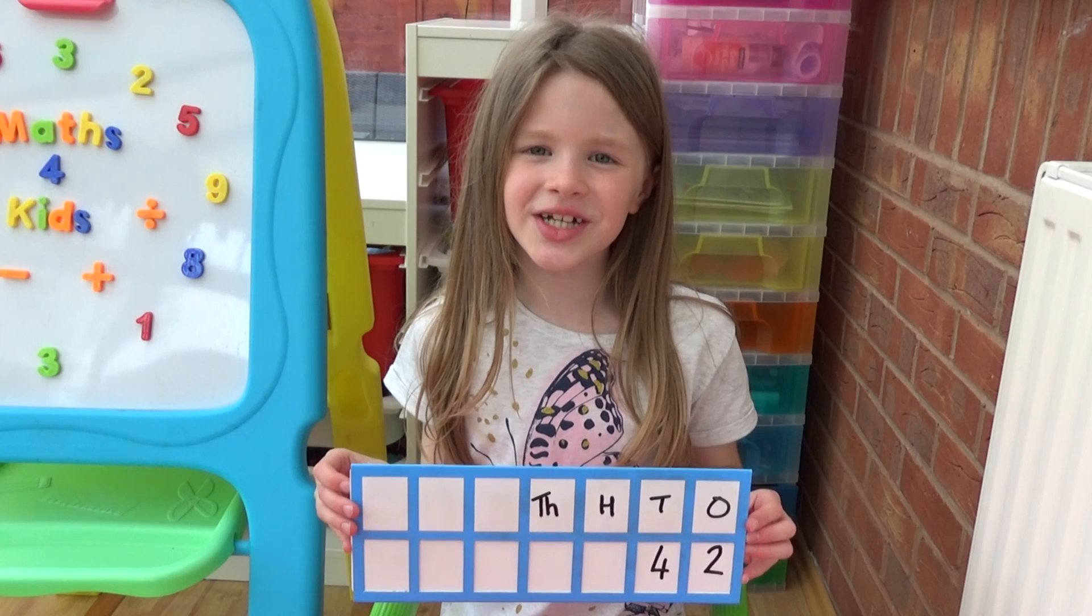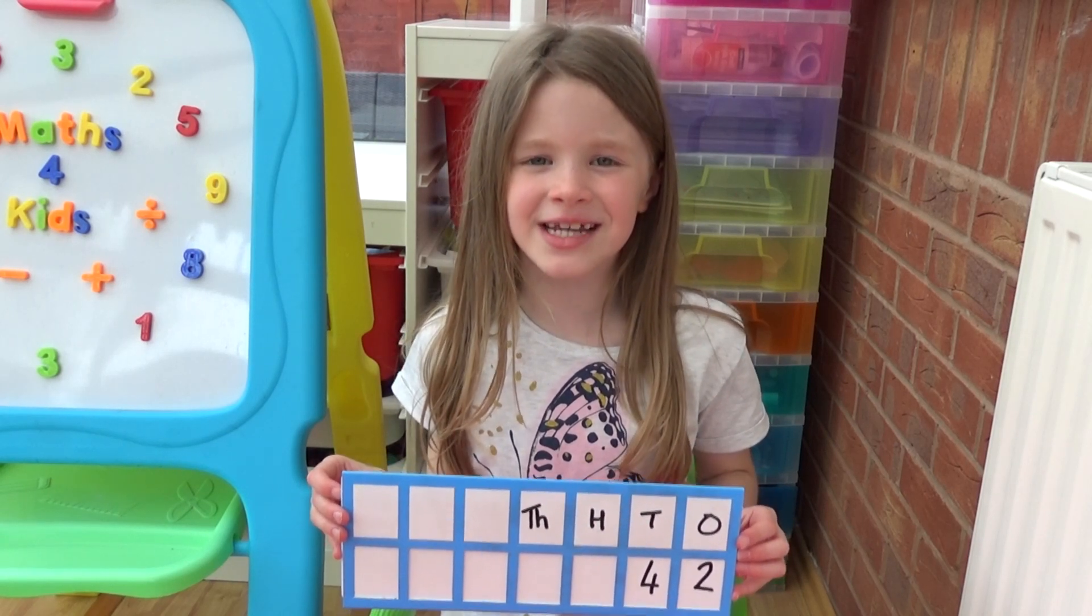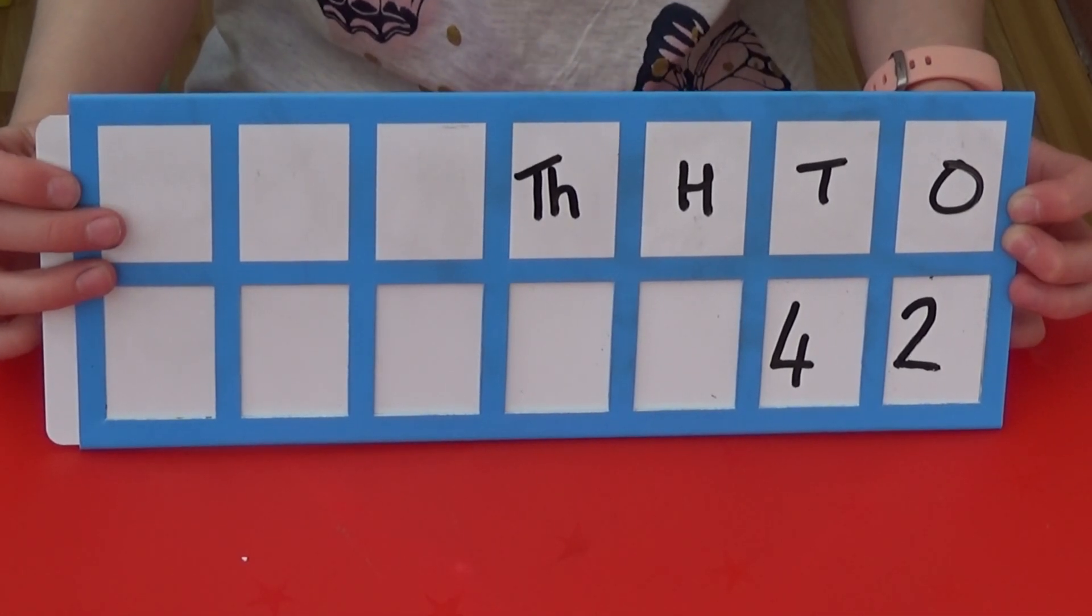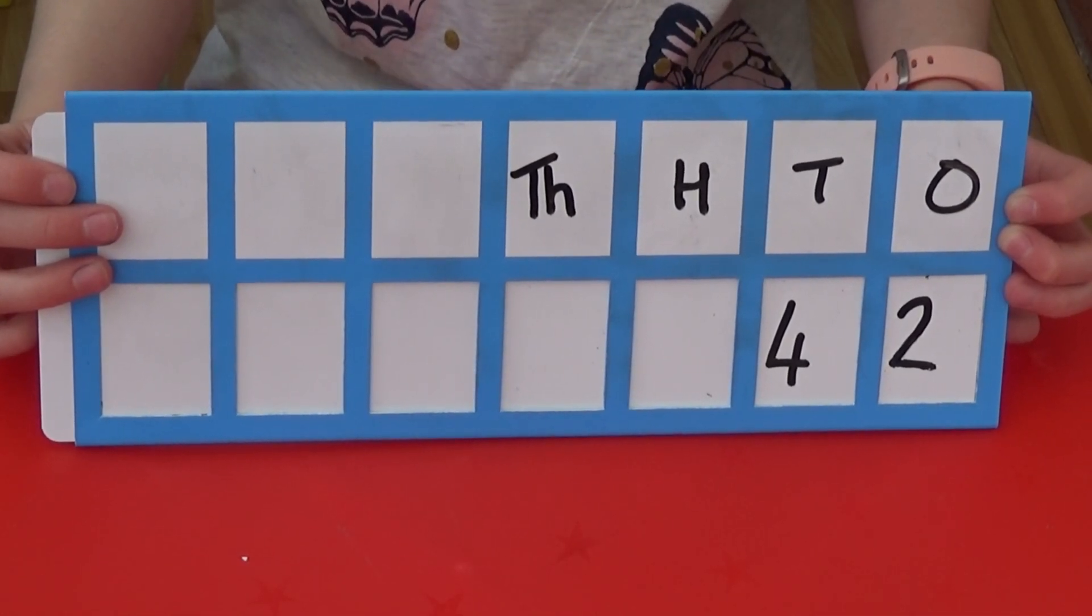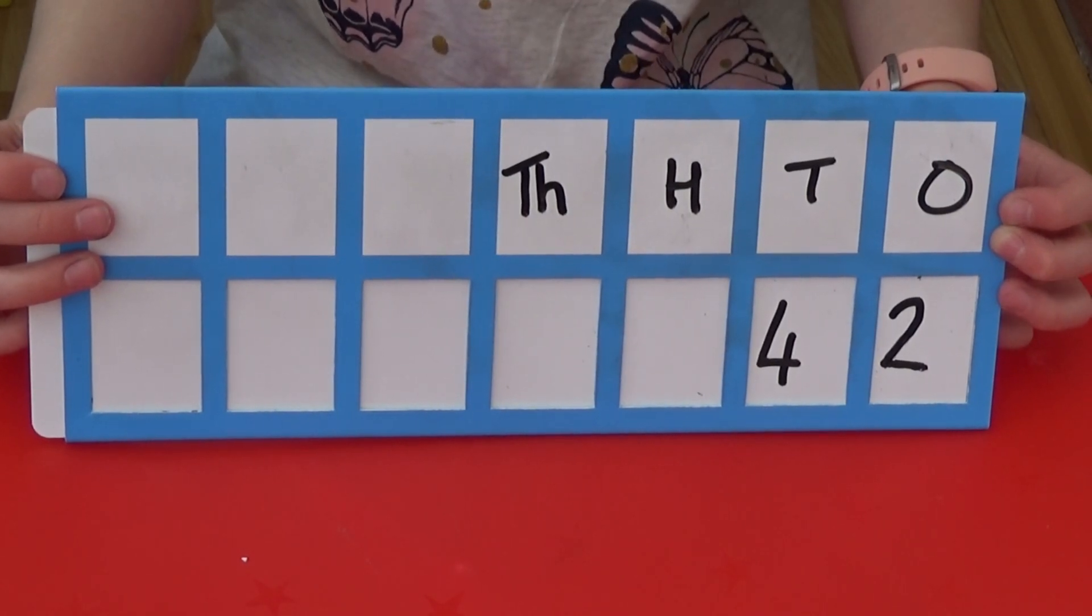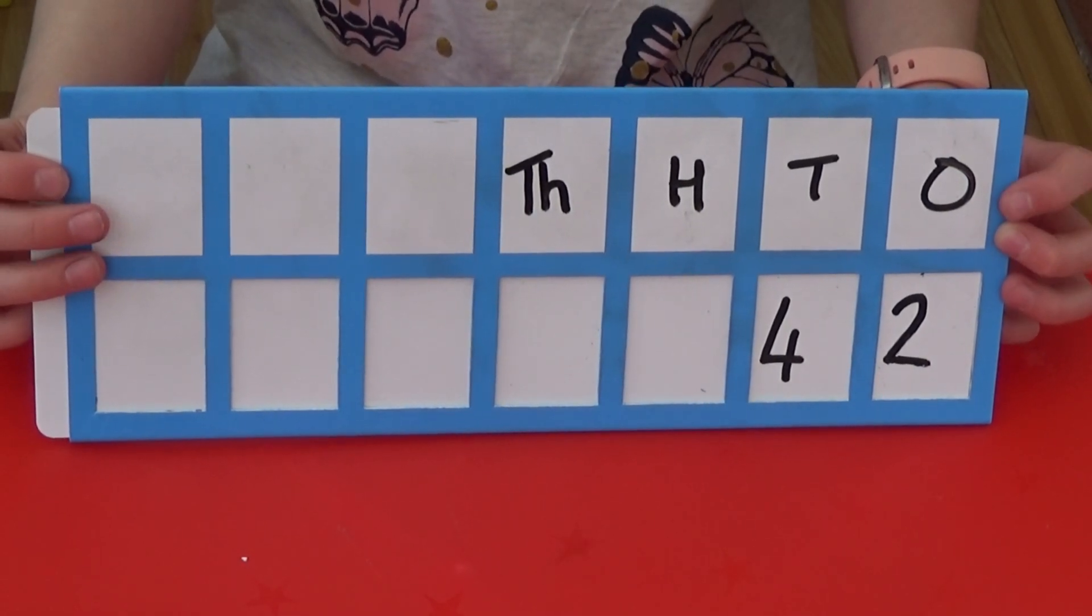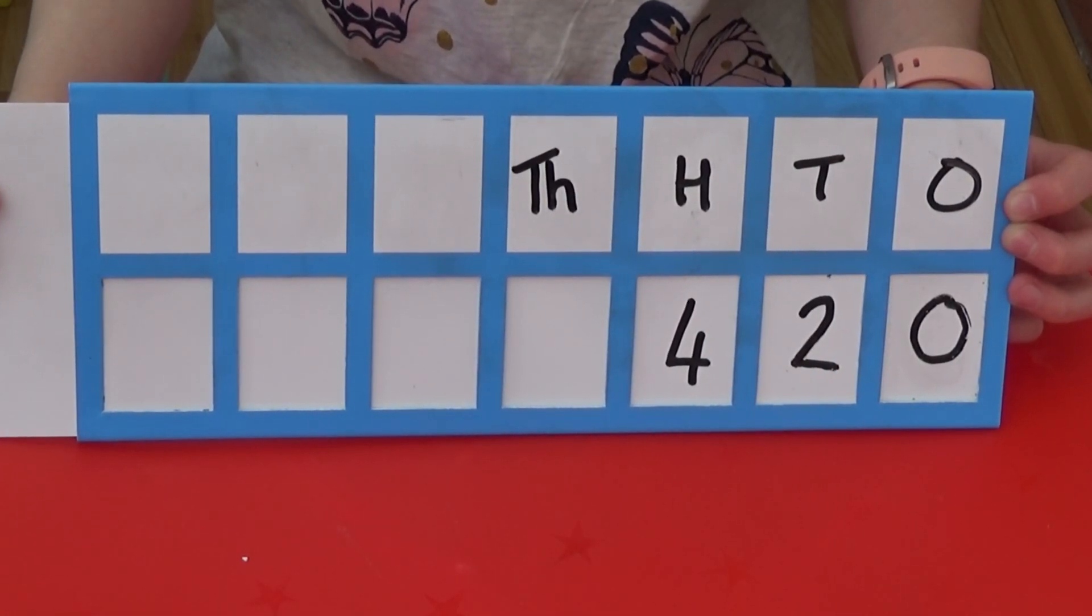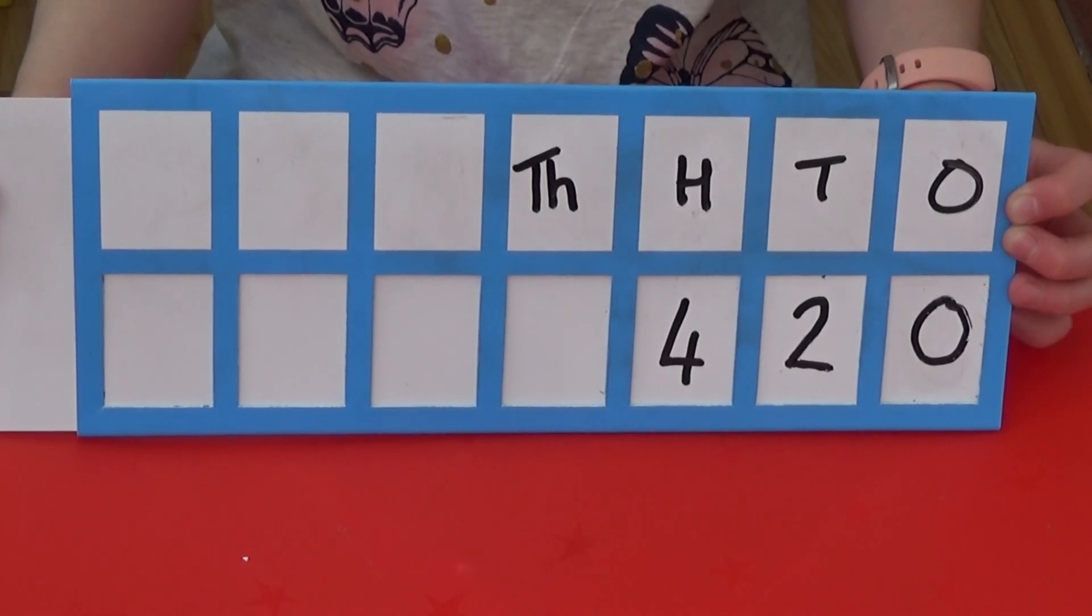We can also show this by using a place value slider. I have written 42 in the 10s and 1s column of the place value slider. As we are multiplying by 10, we need to pull the slider so each digit moves one column to the left. I then have to write 0 in the column which has been left empty.